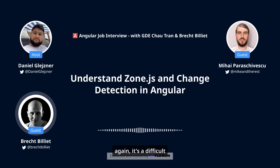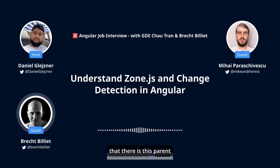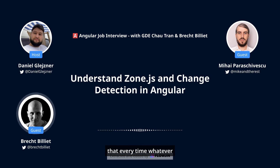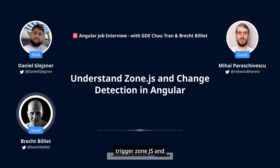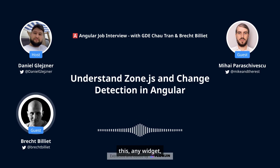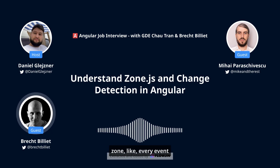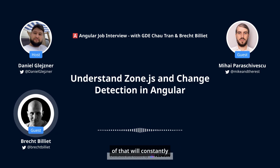It's a difficult question. I'm not expecting them to know that there is a parent zone and a child zone called the Angular zone, but I do expect them to know that every time an event happens it will trigger zone.js, and there's an outer zone and how we can prevent that. For instance, if you have any widgets, any map, any game — anything that you instantiate in ngAfterViewInit — if you're running this in the inner zone, every event that happens inside of that will constantly trigger change detection.